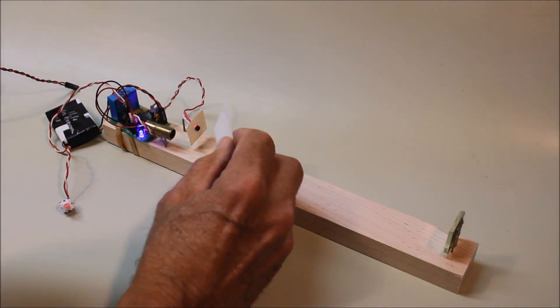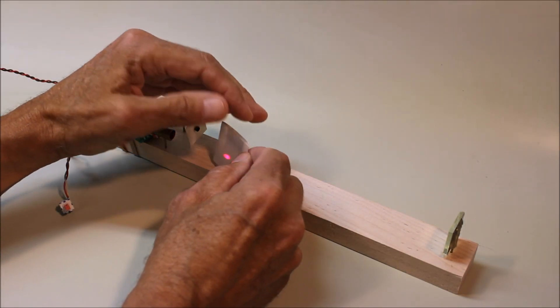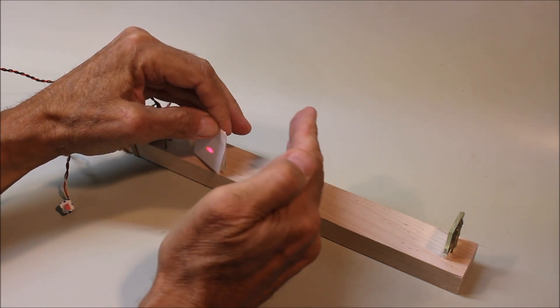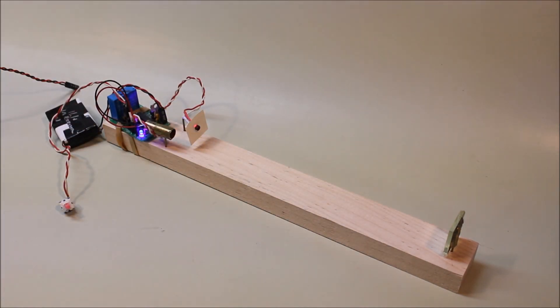Now if I darken the room, I guess you can see it a little bit there on that piece of paper. If I darken it a bit, but it is still much, much less visible than it was before. That's the advantage of using the microcontroller.